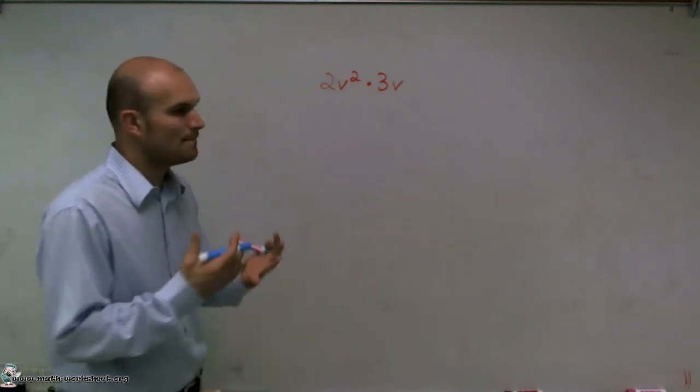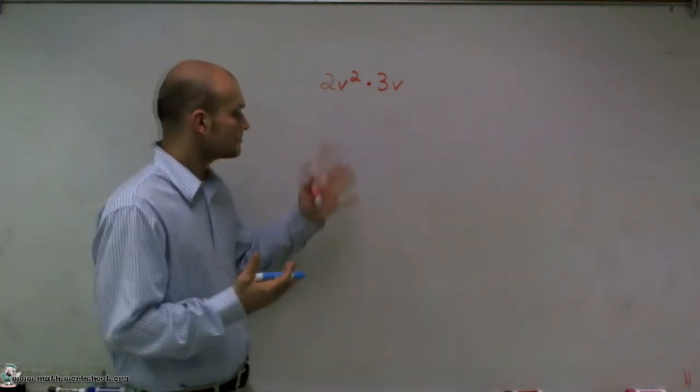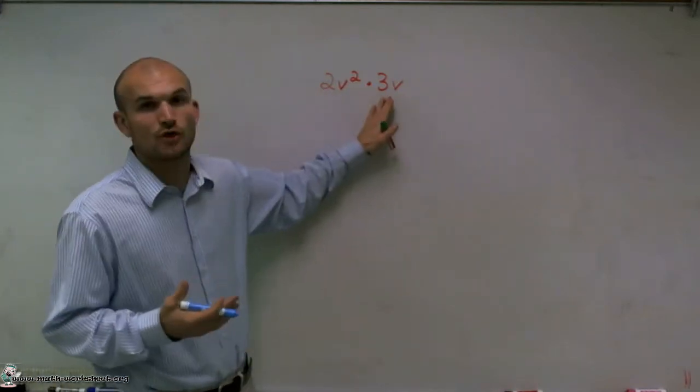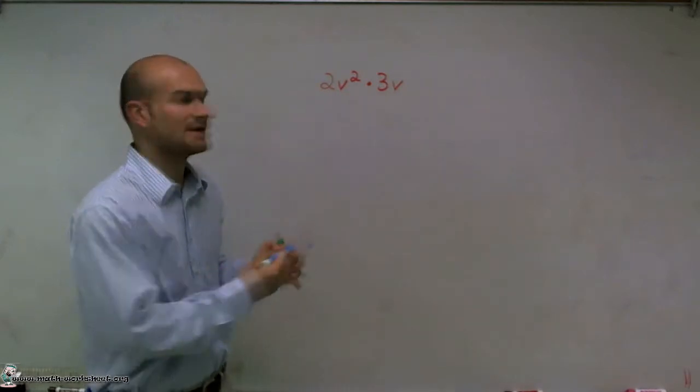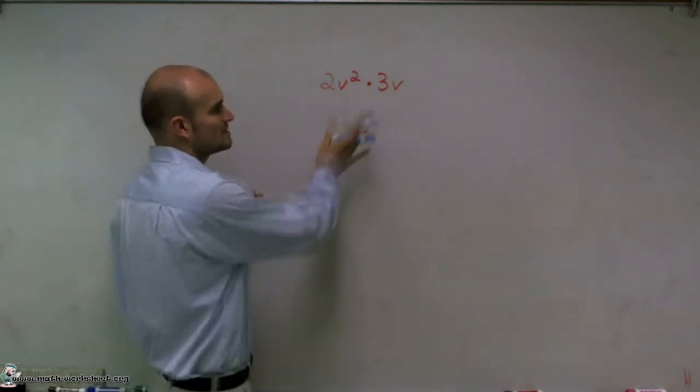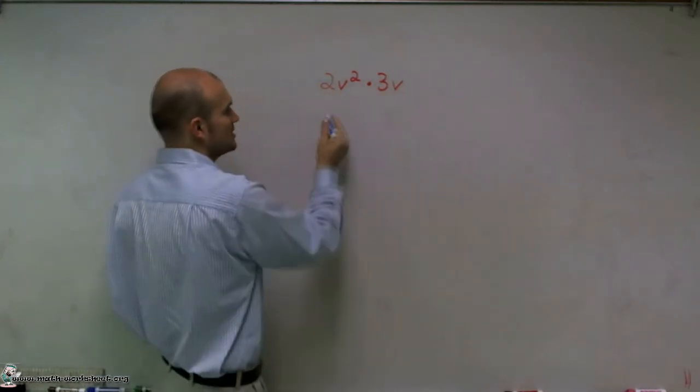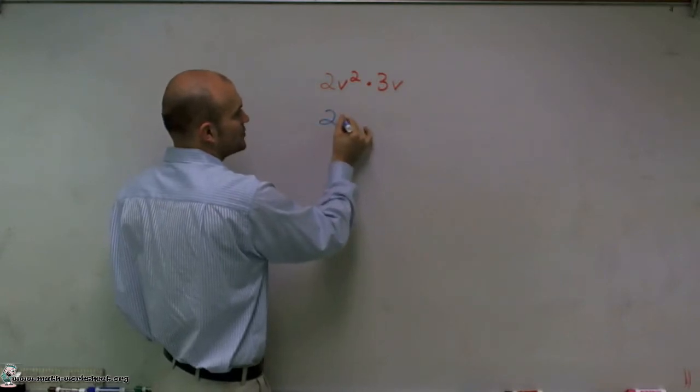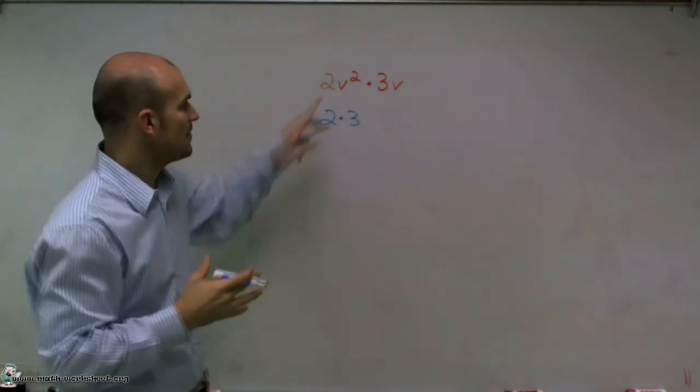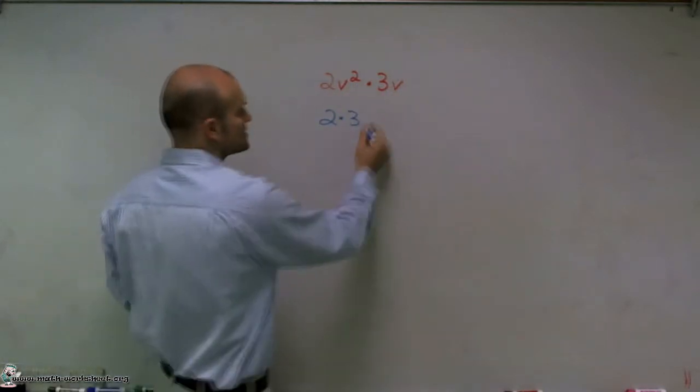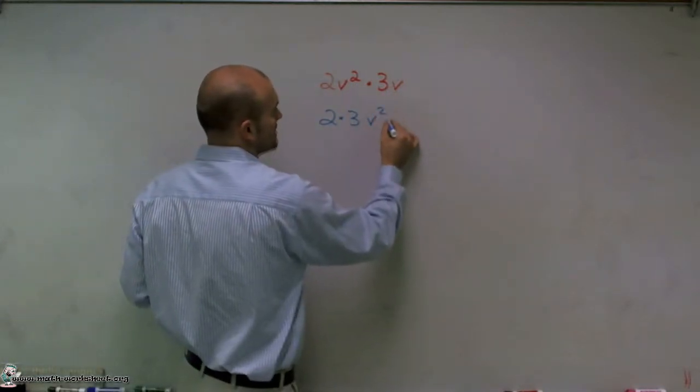So whenever I'm multiplying two expressions, we need to make sure that we can multiply our two coefficients by each other. So one thing I can do is I can rewrite this expression times this expression as just multiplying my two numbers or coefficients by each other. Then I'm going to multiply my two terms, v squared times v.